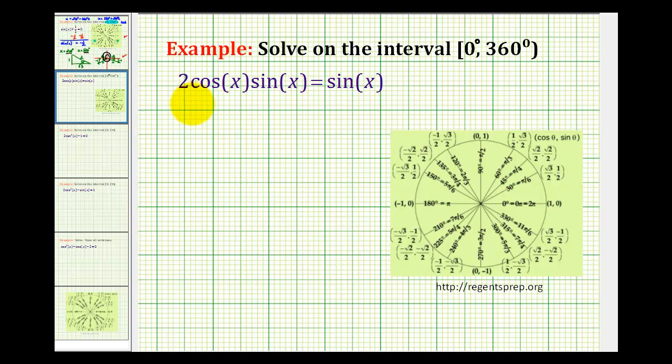Here we want to solve the trig equation 2cos(x)sin(x) = sin(x) on the given interval from 0 to 360 degrees, where it's closed on zero degrees and open on 360 degrees.